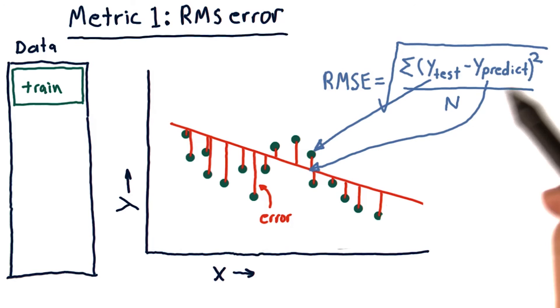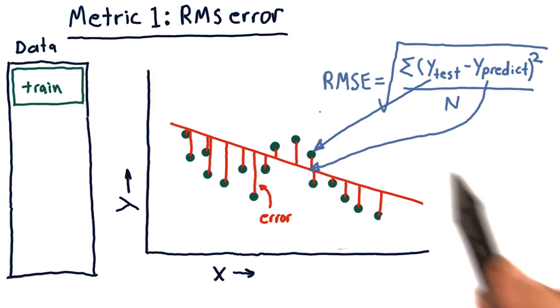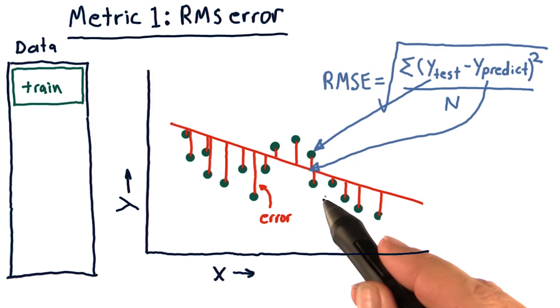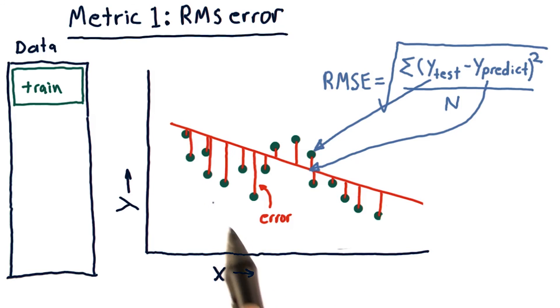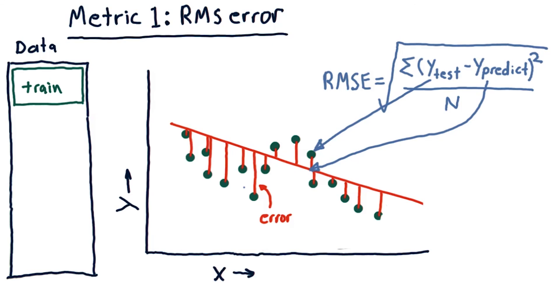sum all those together, divide by the number of points, and take the square root. And that's our root mean squared error. And what this is an approximation of really is sort of the average error here. But we end up emphasizing larger errors a bit more.